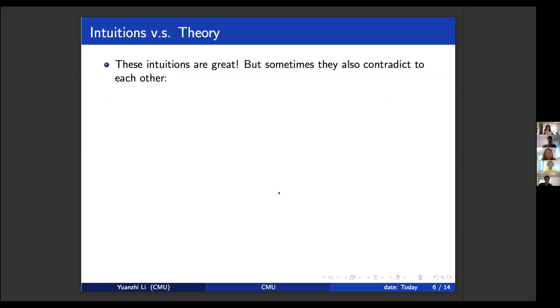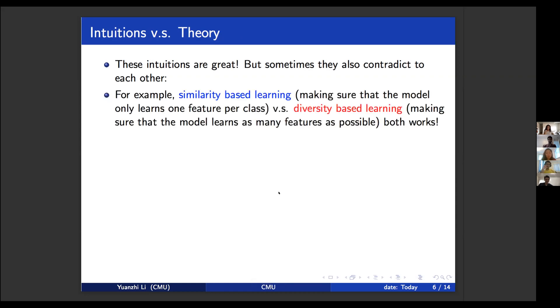So these intuitions are very, very good. But sometimes, these intuitions may contradict to each other. For example, somebody may tell you, you should use similarity based learning, which is making sure that the output of each layer of the neural net only learns one feature per class. This is called similarity based learning. And sometimes people may tell you that diversity based learning actually works better. And diversity based means that for each layer of the neural net, you want the model to learn as many features as possible. So you will have different, contradictory training methods that both lead to a better solution compared to you not doing anything. But they contradict to each other. So which one should you take?